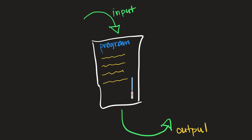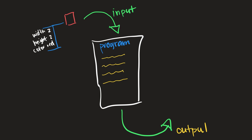To explain this better, let's use another example. Let's say we want to pass a square into our program as input, and we'll represent that square as its properties: the width is two, and the height — since it's a square — is also two.